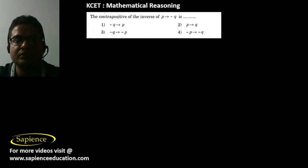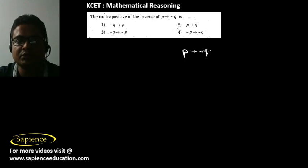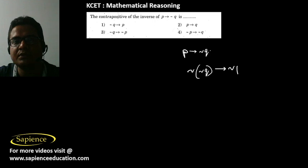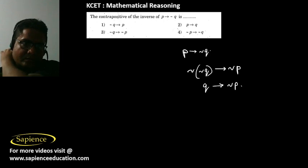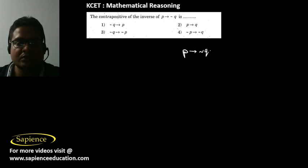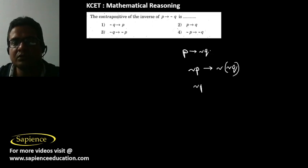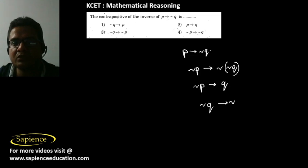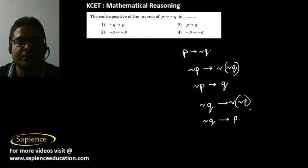Now, the contrapositive of the inverse of P then Q: the inverse is 'if P then not Q', and the contrapositive of that is 'if not of not Q, then not P', which simplifies to 'if Q then not P.' Wait — not of not P gives P, so the result is: if not Q then P. Option 1 is the correct answer.